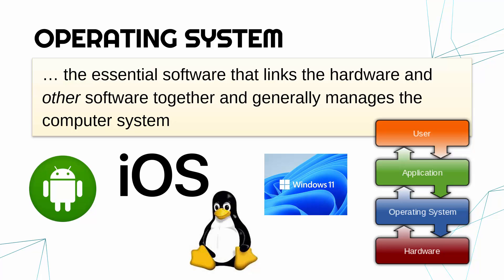We must have an OS — if you haven't got an OS, you can't run other software. The hardware actually carries out the instructions, but the operating system sits between other applications and the hardware. It's a barrier between the two, so we need it because applications can't work directly with hardware; they're designed to go via an operating system.